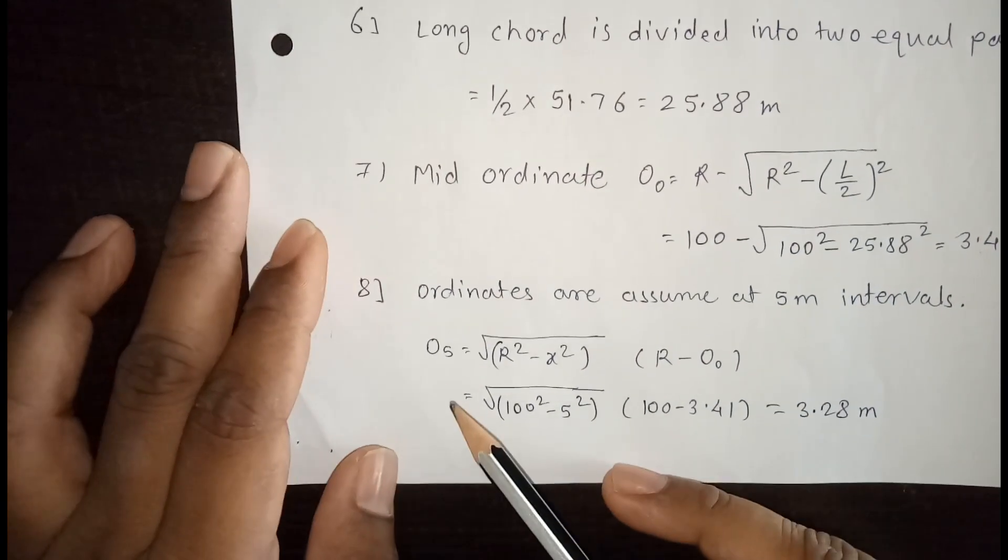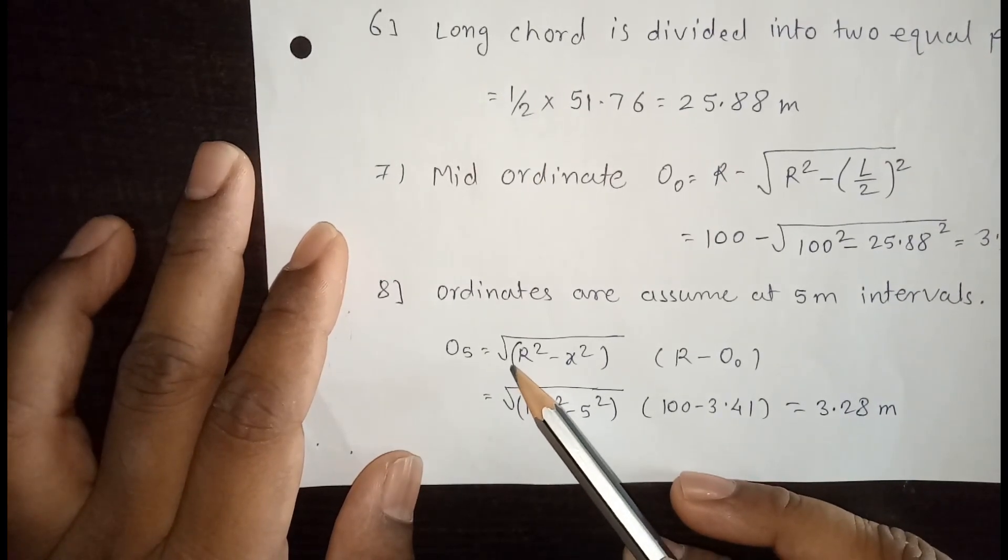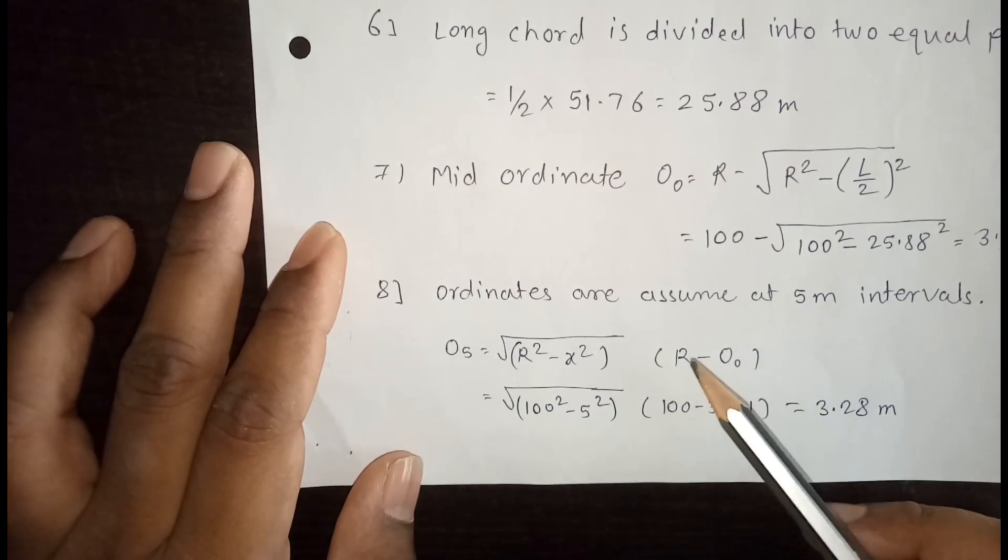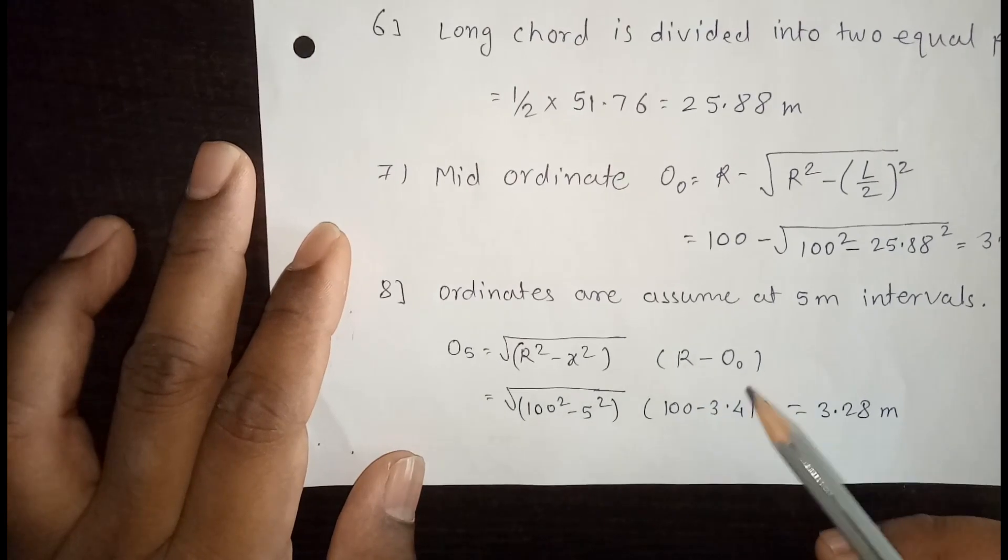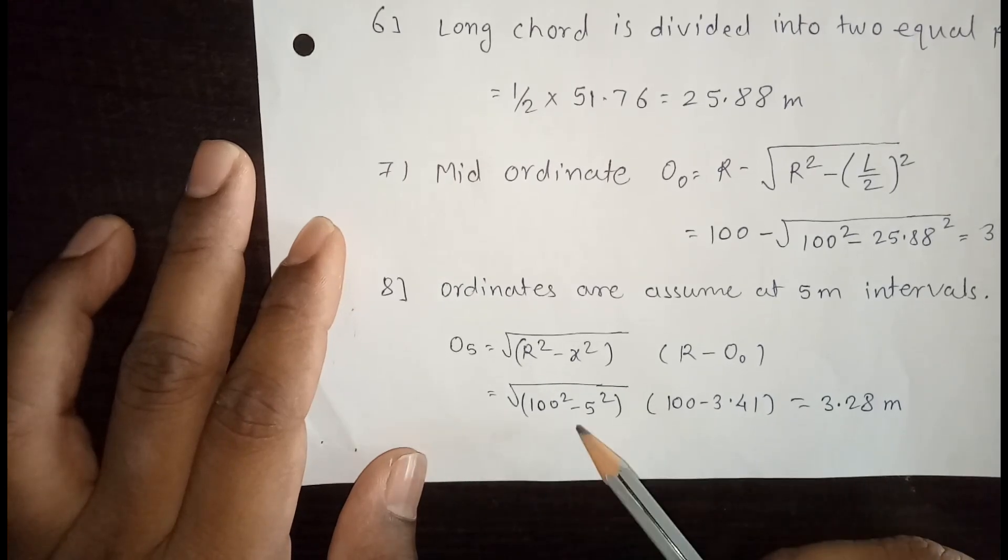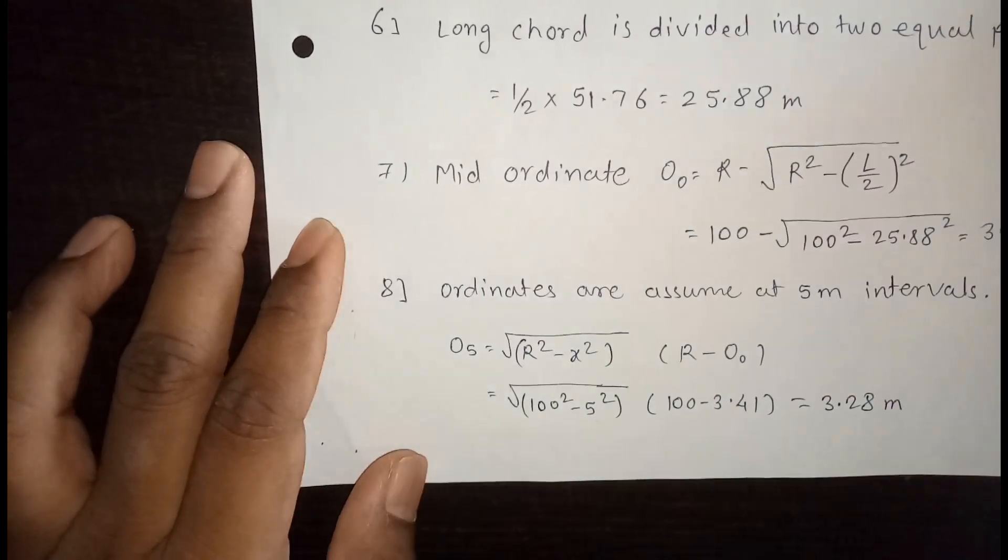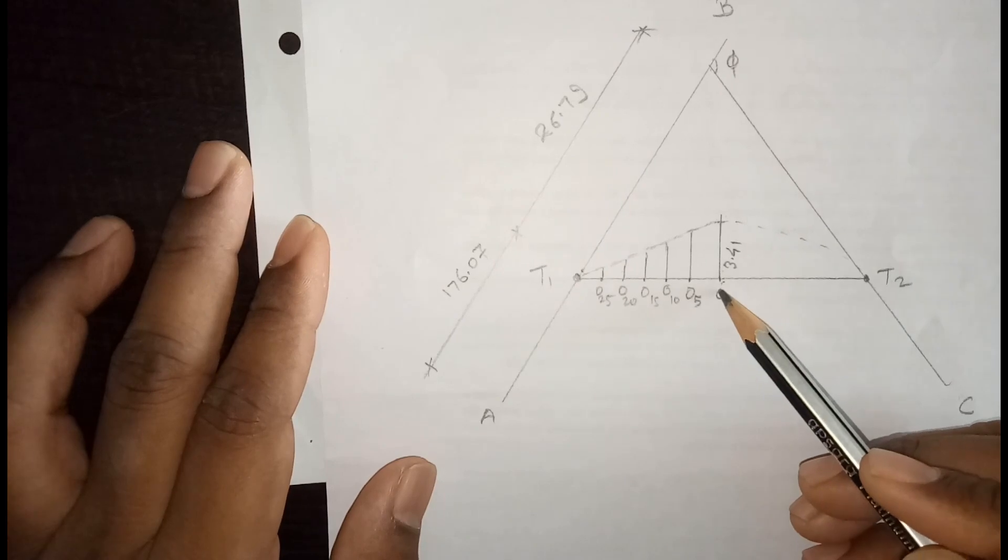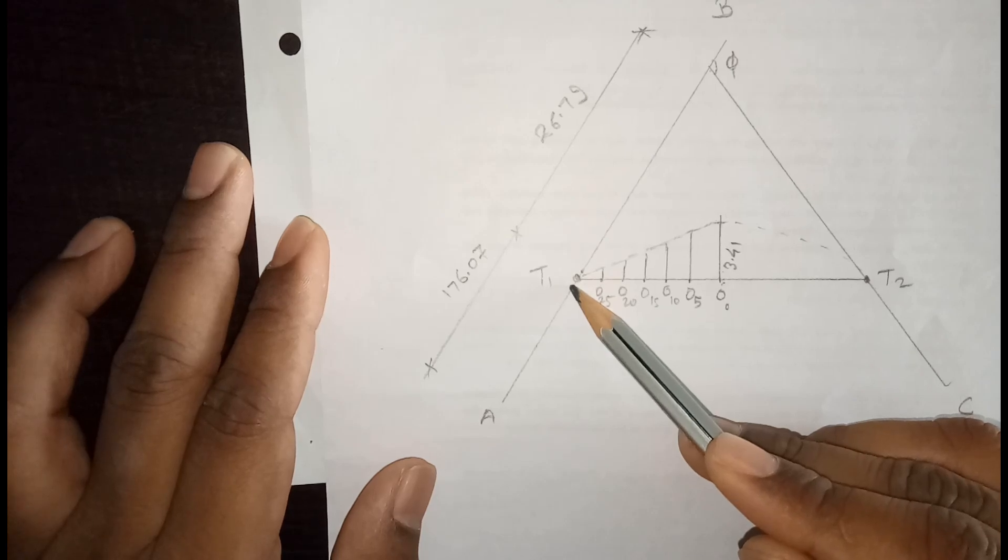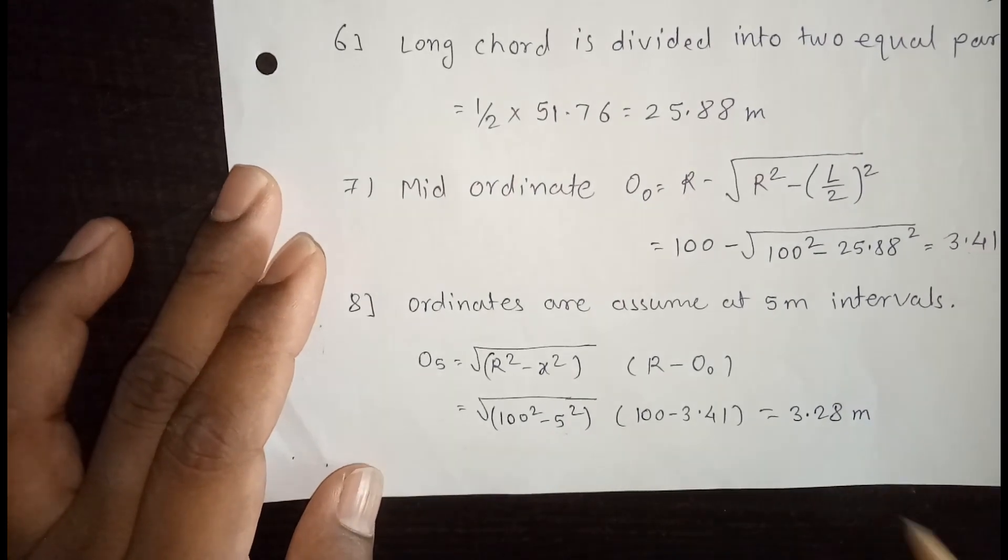Ordinate or assume at 5 meter interval. So interval is 5 meter. So 0, 5, and this is first interval. That is 0, 5. Formula for ordinate is R square minus X square bracket complete, then R minus O0. So O0 we just calculated, that is 3.41. R is 100 and X is the interval, that is interval is 5. So this is my first interval. This is 0, 5, 10, 15, 20, 25 and 25.88. Last point is 25.88. So 0, 5 gives a 3.28. So this is the ordinate for 0, 5. This distance is 3.28.